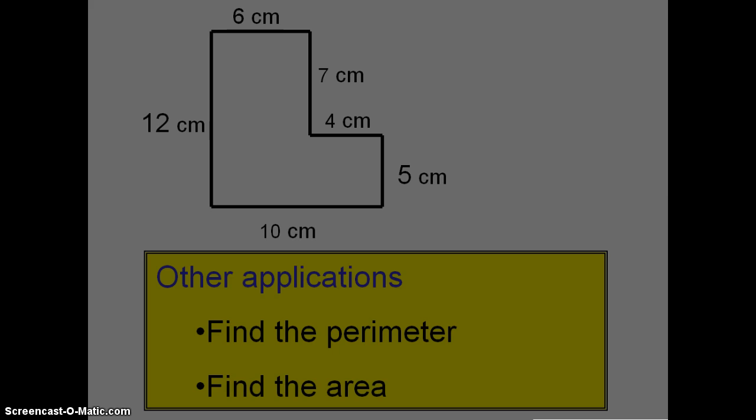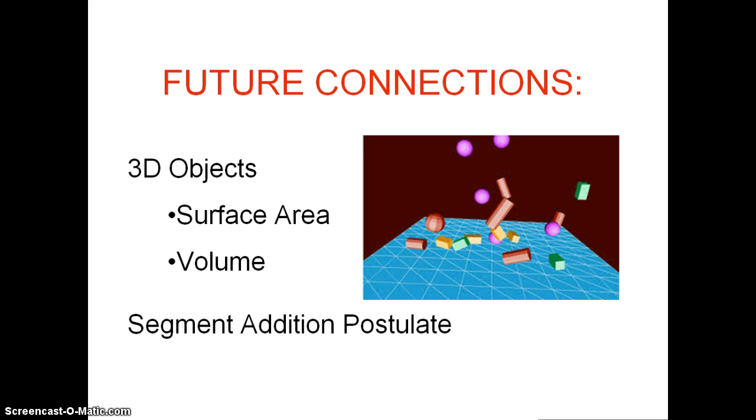In conclusion, I am going to leave you with one final thought of how we will use this again in the future. We will find missing segments and sides of three-dimensional objects, which means we will be able to find surface area of these objects and find the volume.